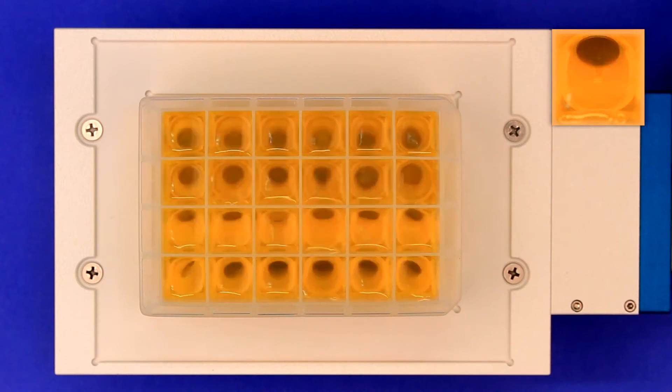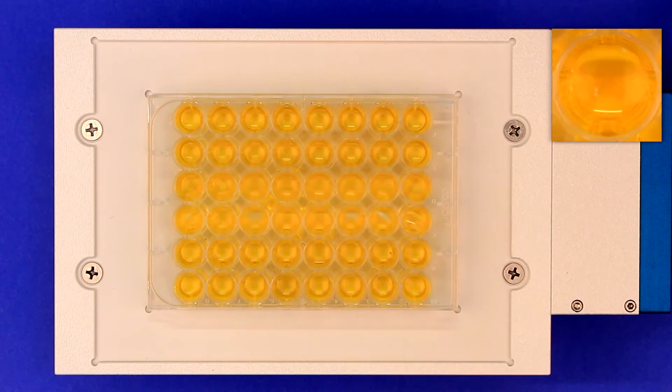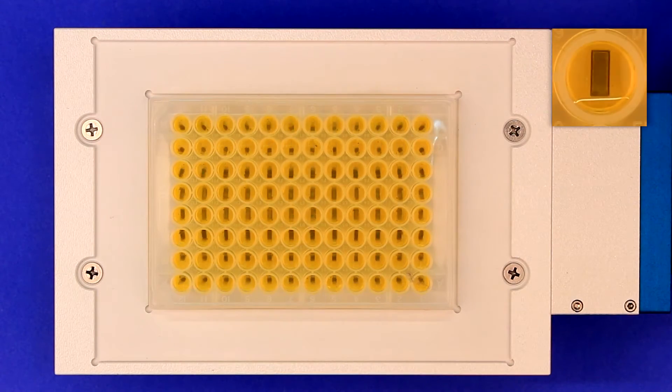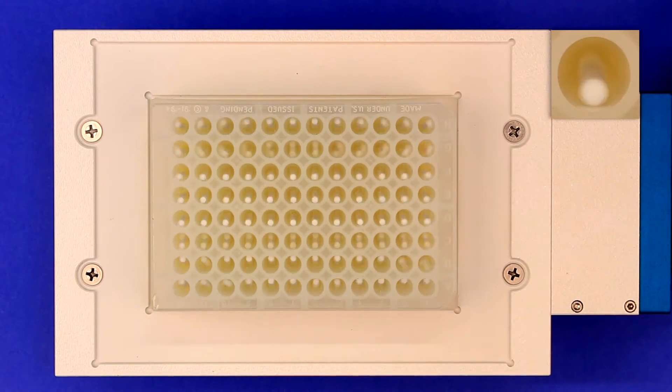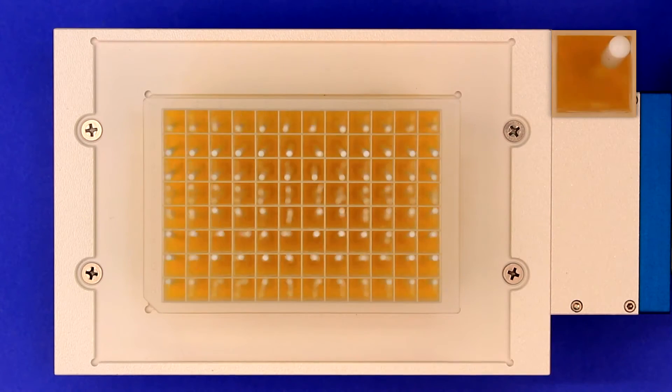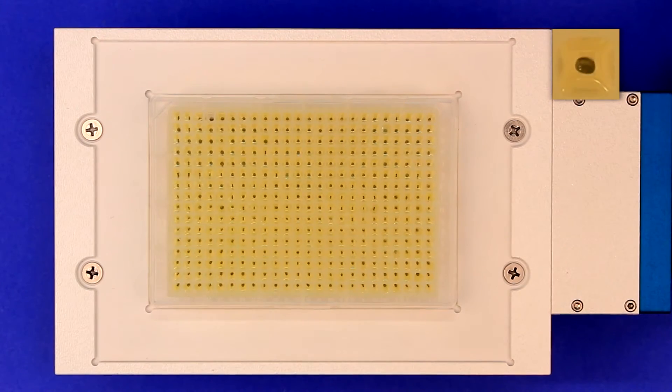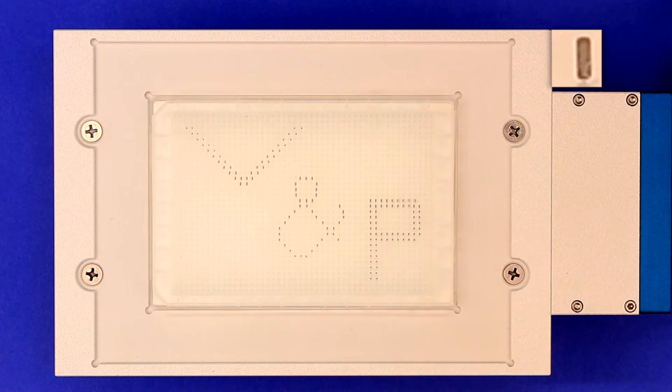You can see the tumbling action of our stirrer. A close-up view in the right-hand corner shows the unique motion of our stirrer elements. You can see that any well shape or format is compatible, even in 1536 microplates.